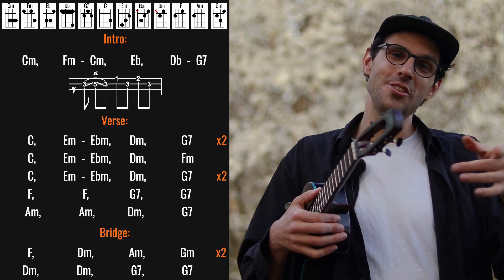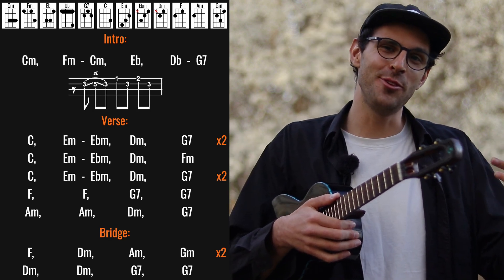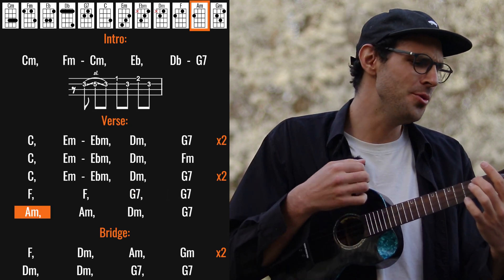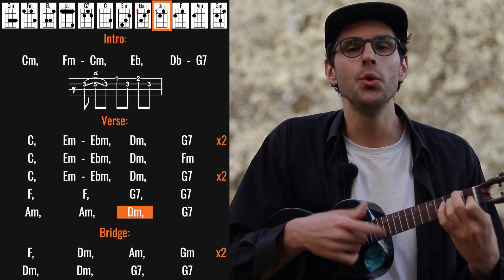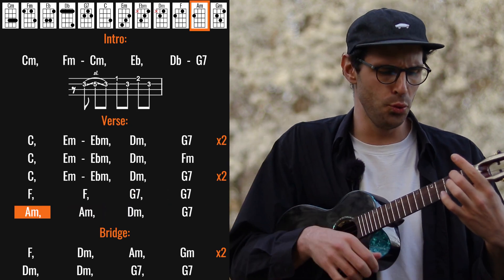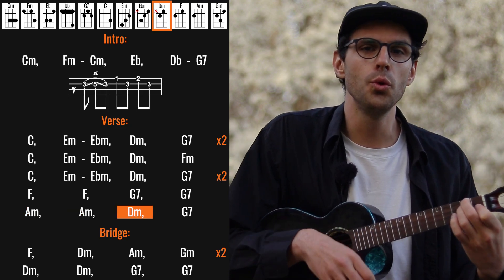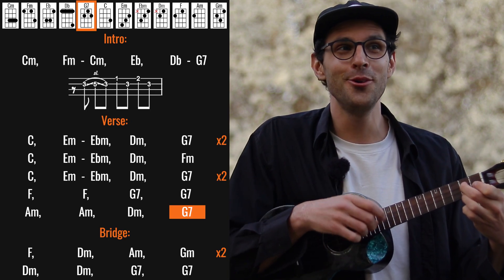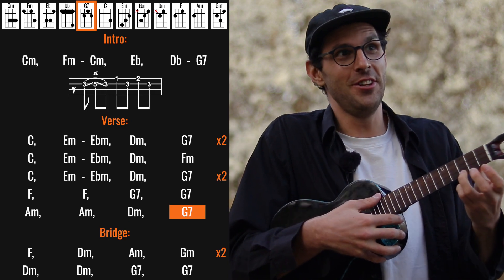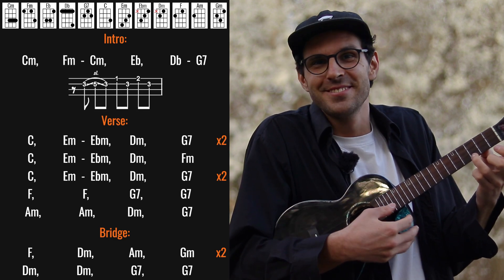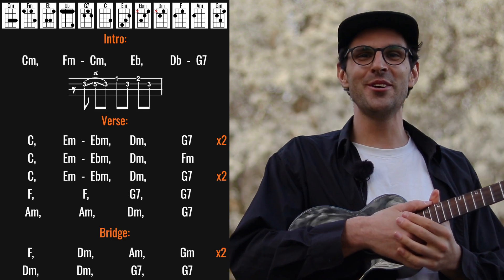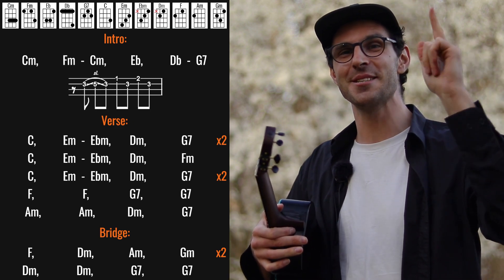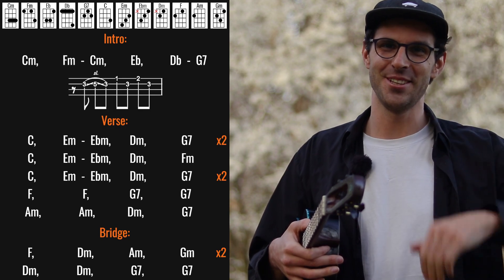And for the outro we just repeat the last line a few times, and you can end it on a positive note with a C major. All right, this ends my tutorial for Do You Want to Know a Secret. Thank you very much for watching. Make sure you hit the like button, subscribe to the channel, and I'll see you on the next one. Goodbye.